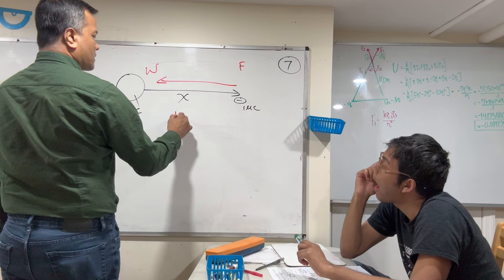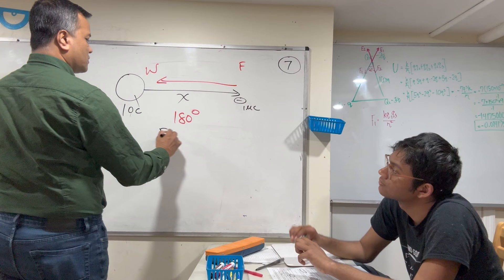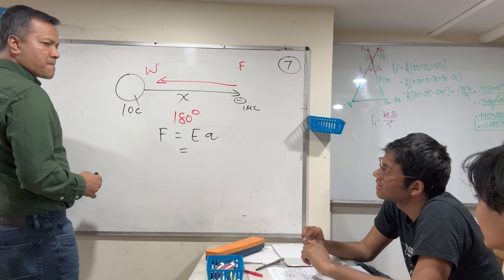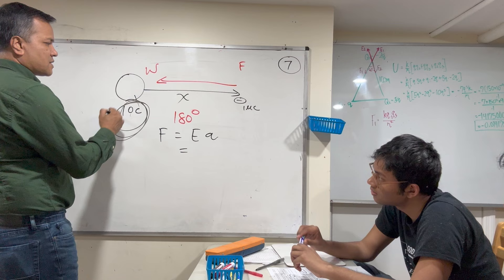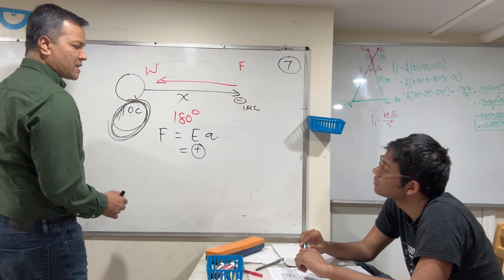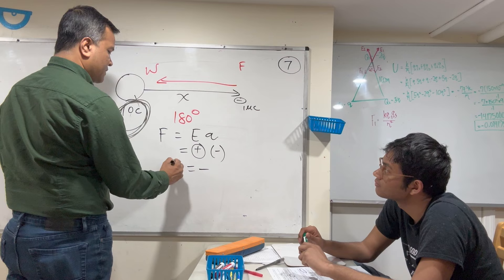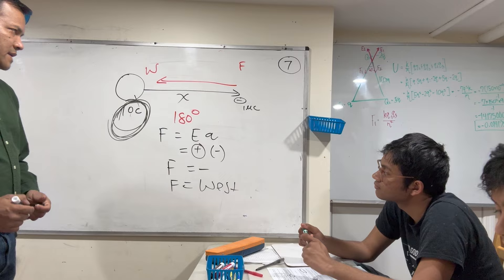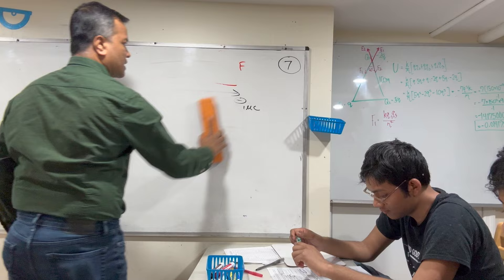Can you prove that mathematically? F = qE. E is positive, q is negative, so F is negative — pointing to the west. That was problem number seven.